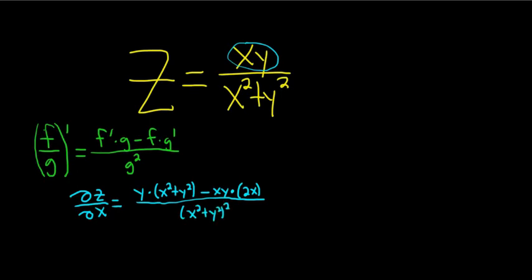Let's go over that again. The derivative of the top with respect to x: the derivative of x is 1, the y hangs out because it's constant, times the bottom piece, minus the top piece times the derivative of the bottom, which is just 2x, because the derivative of y squared is 0. The bottom here is being squared.